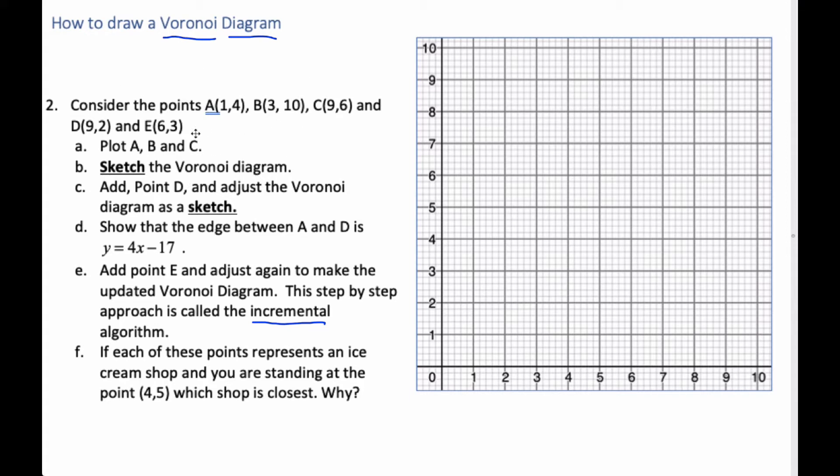We don't plot all five points and then try and do it. We do a point, adjust, point, adjust. And that's the idea of what an incremental algorithm is. So in order to do it, we're going to plot points A, B, and C. So I start off with A, which is going to be point A here. B is 3, 10. And C is 9, 6. That is C.